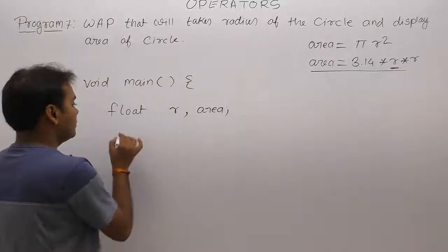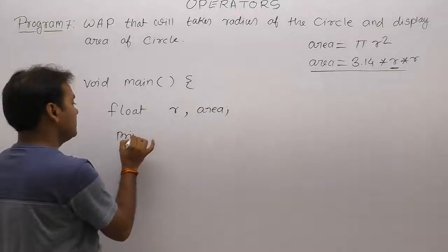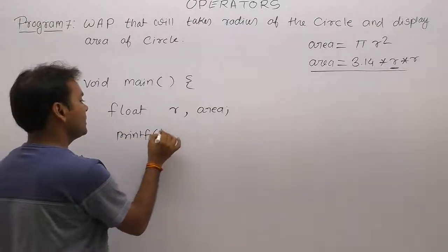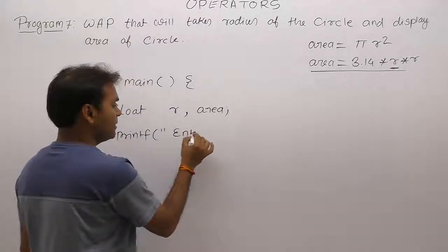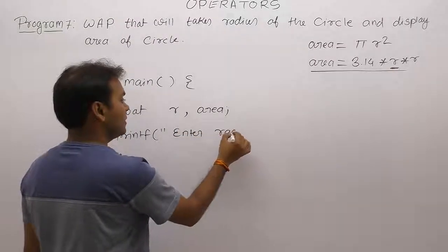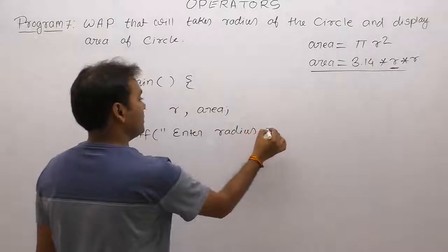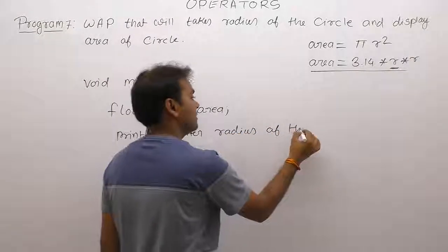First of all, reading inputs from keyboard. Input means data is clear: area clear or radius clear. Radius reading: enter radius of the circle.